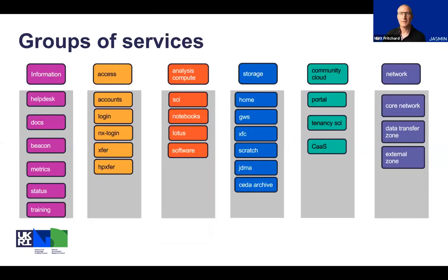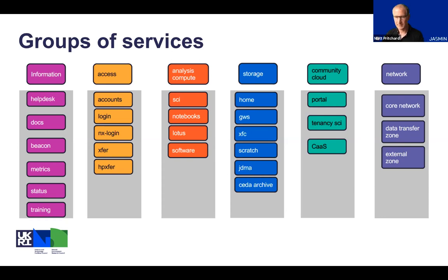It's always been a challenge to represent JASMINE as a picture, so we've put together two diagrams to help explain and help you navigate around the system. We've colour-coded the various groups of services: information access, analysis compute, storage, community cloud, and network components. We'll try to use these colours throughout our talks and in the training materials to help you orientate yourselves around the system.